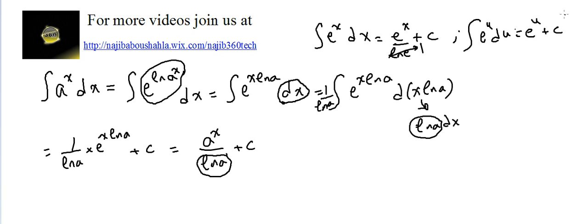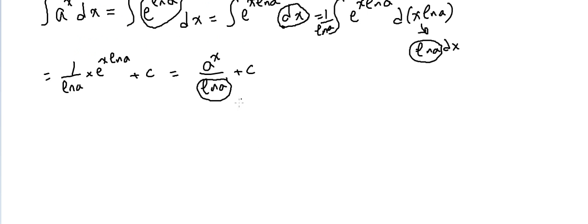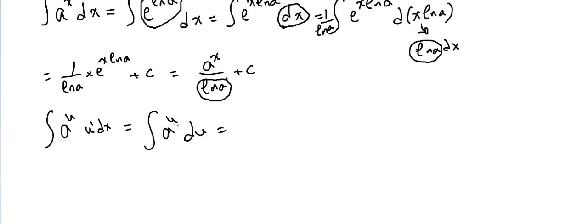That's the only difference, so we have to be careful. More generally, for the integral of a^u, we need u prime times dx. This gives us a^u · u' dx as du, so the integral of a^u du is simply a^u over ln a plus c.